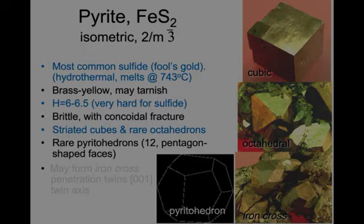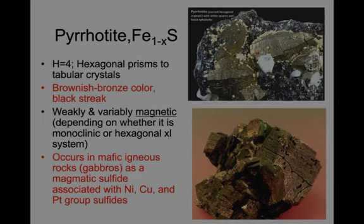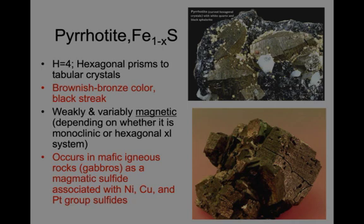The last sulfide is pyrrhotite. It has a structural formula Fe₁₋ₓS — slightly less iron than sulfur — and that causes it to be magnetic. This is the only magnetic sulfide of any importance, and it's weakly magnetic compared to other magnetic minerals. Pyrrhotite forms hexagonal prisms with a hardness of 4, as you can see in the upper right. It has a brownish-bronze color and a black streak. It occurs in mafic igneous rocks such as gabbros as a magmatic sulfide, and is often associated with nickel, copper, and platinum group elements.